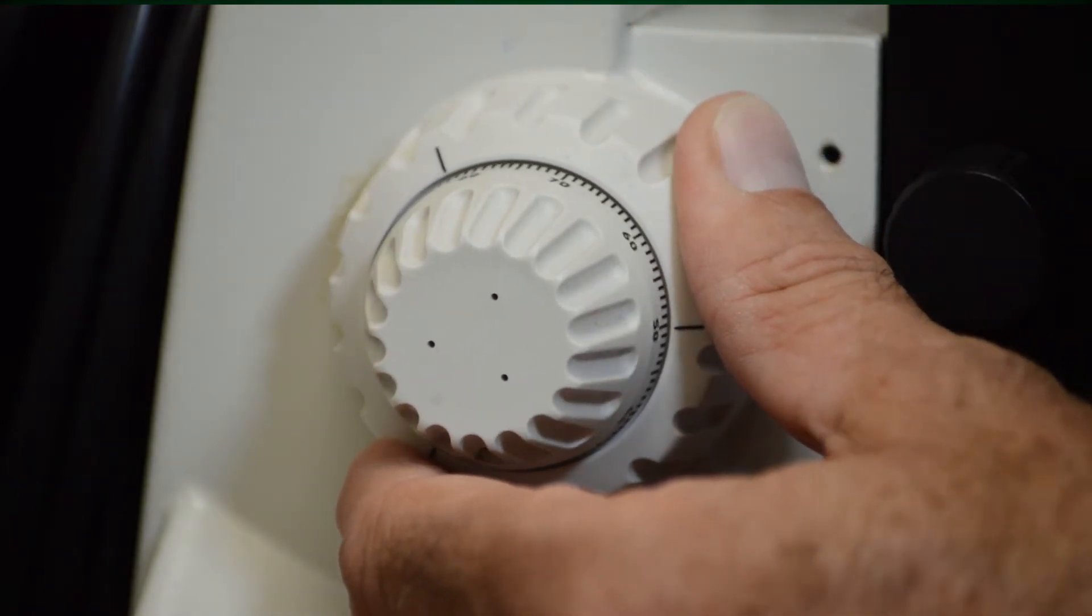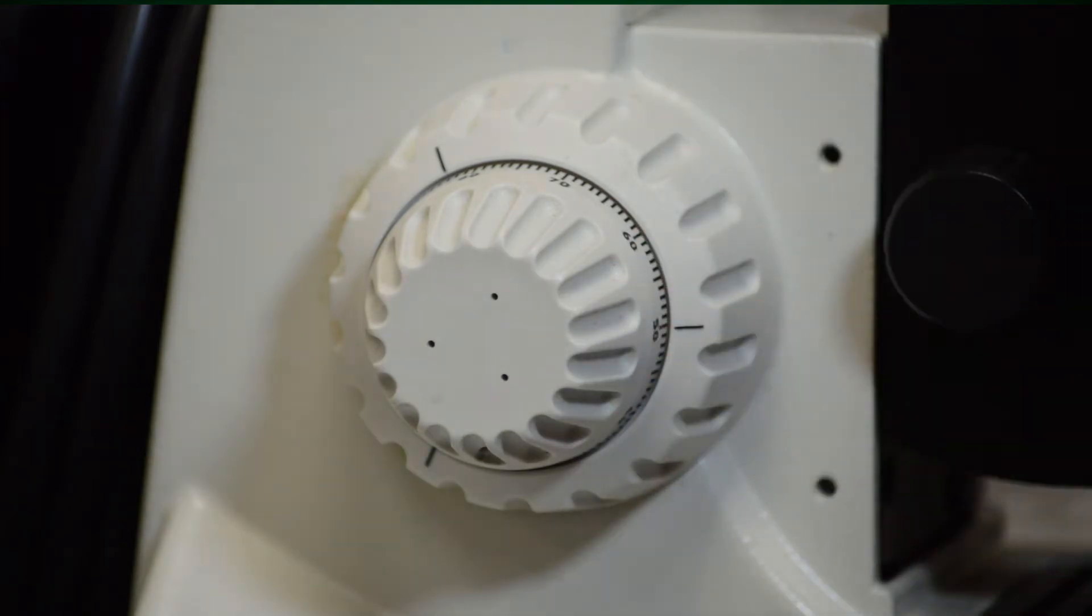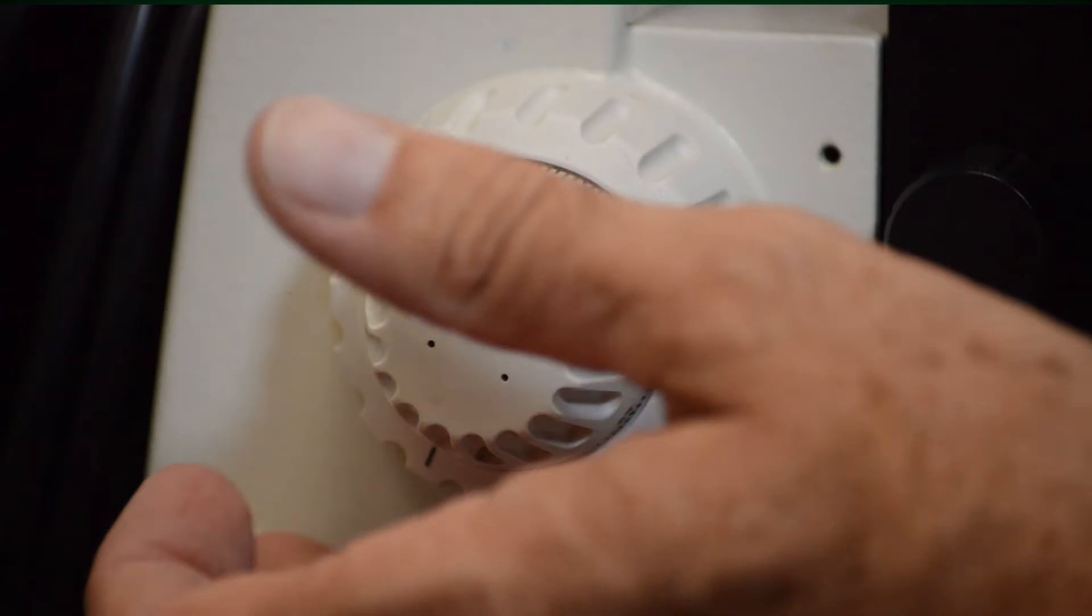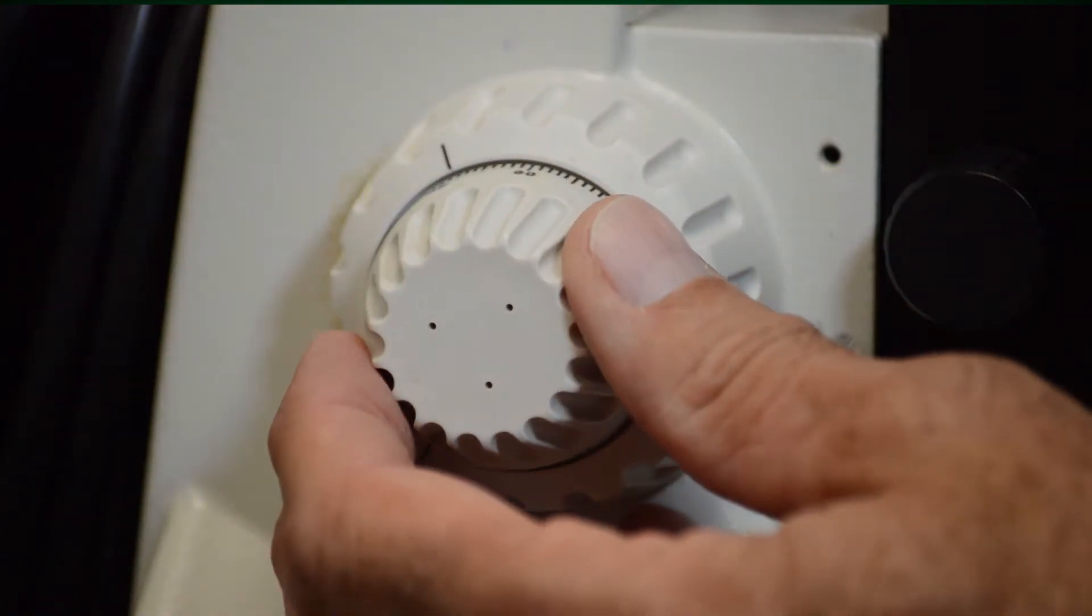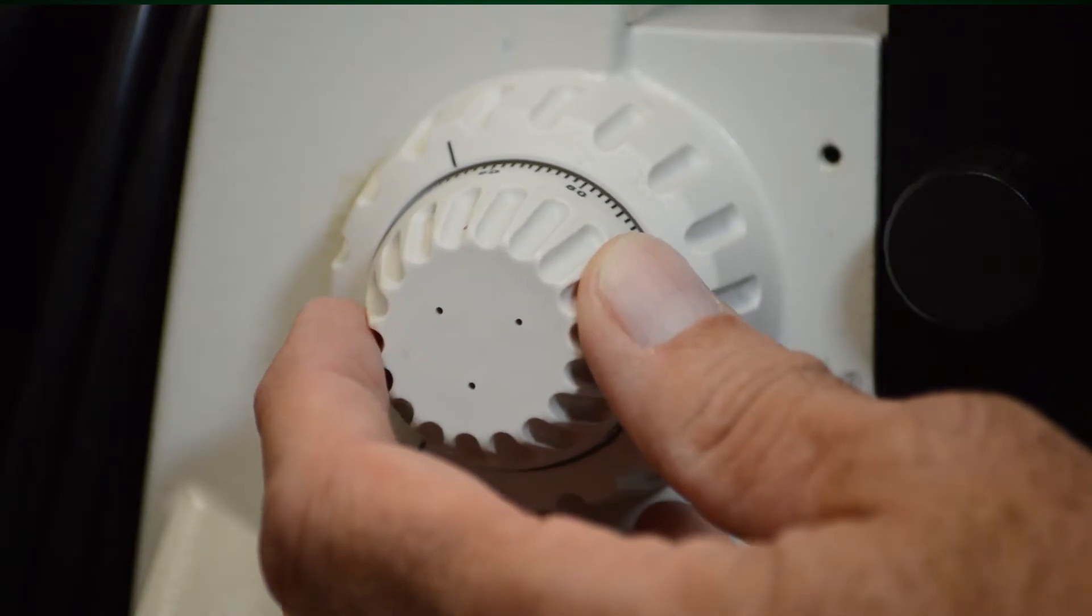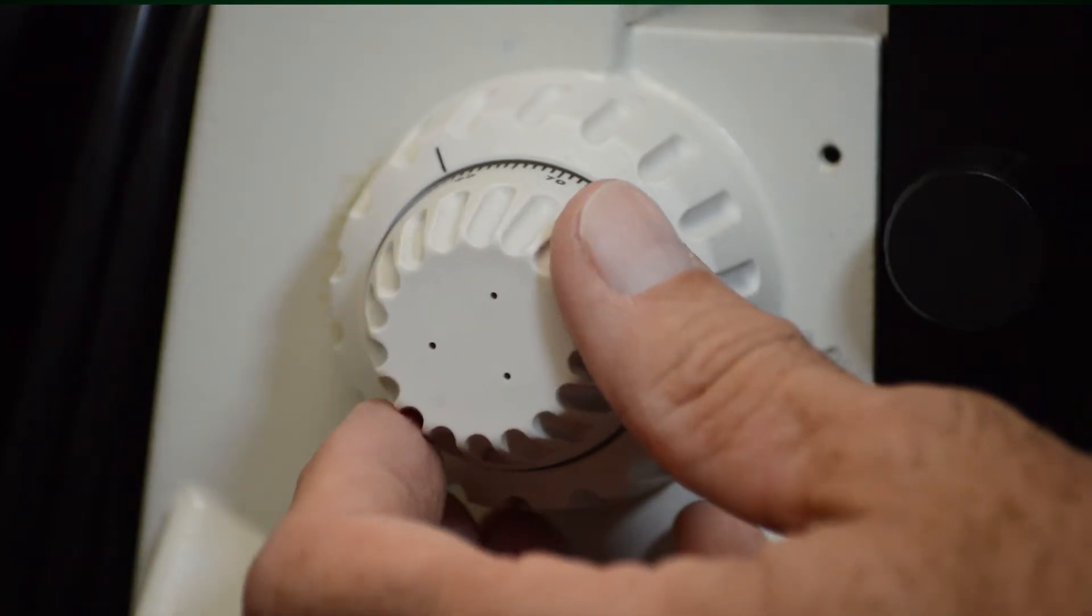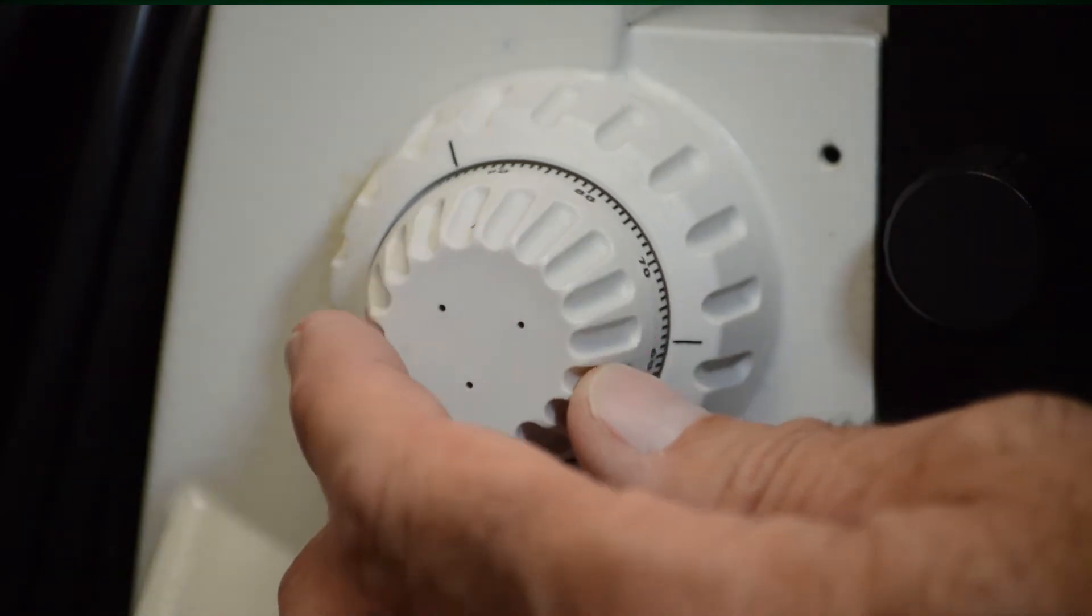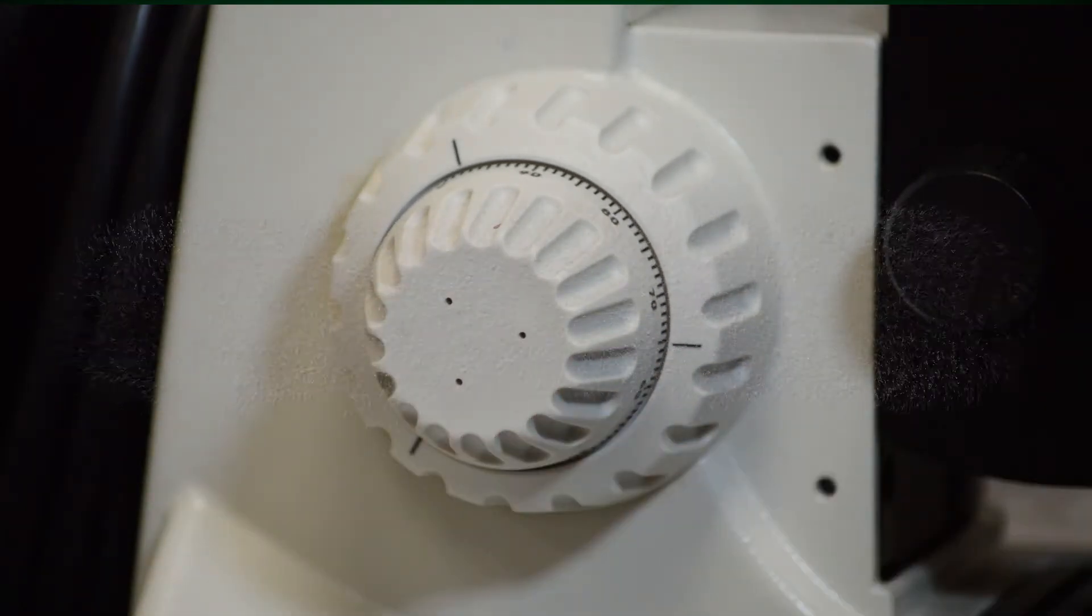The coarse focusing knob is the outer knob. The fine focusing knob is the inner knob. When you turn these do not turn them quickly but rather turn them slowly so that you can actually see where you are going. If you turn them too quickly many times you jump past what you really want to look at.